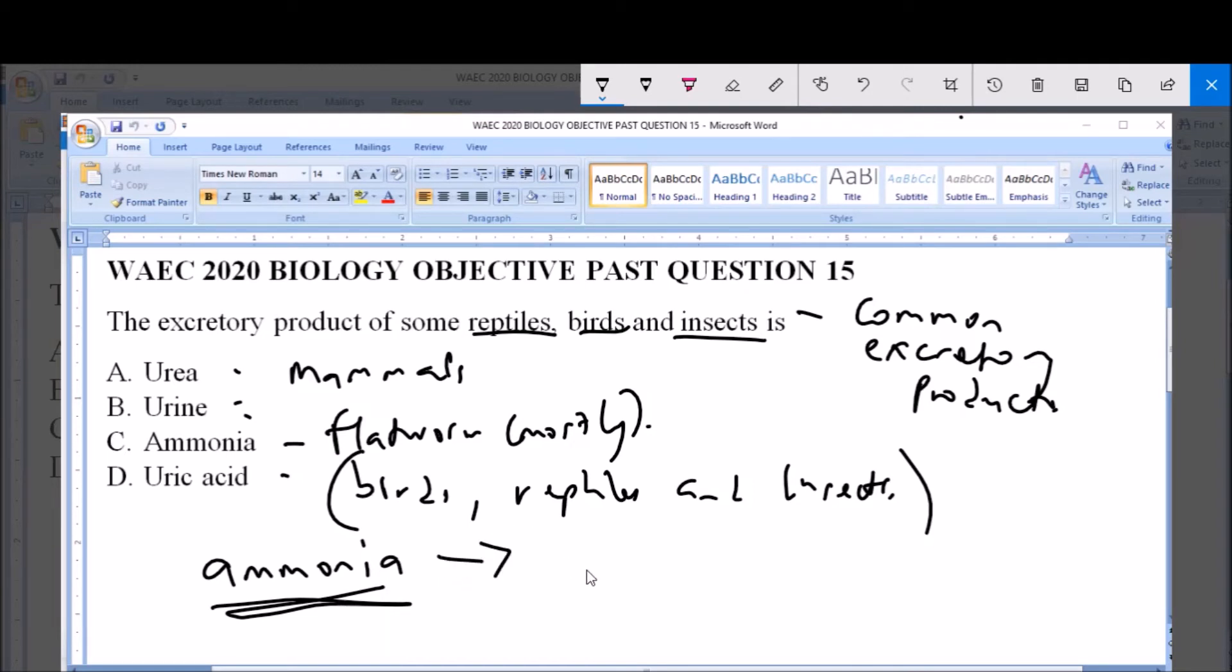For birds, reptiles and insects, the ammonia is converted to uric acid. The reason why it is not further converted to urea like in mammals is because conversion of ammonia to uric acid is more energy intensive than conversion to urea.